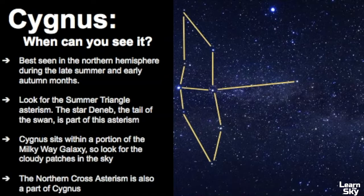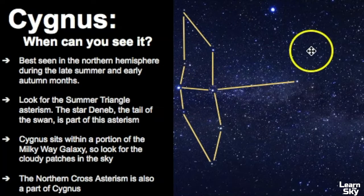So when can you see it, and what does it look like? Cygnus is best seen in the northern hemisphere during the late summer and early autumn months. The best way to find it is to look for the Summer Triangle asterism. The star Deneb, which is the tail of the swan, is part of this asterism, and I'm pointing it out right here. This is the Summer Triangle.